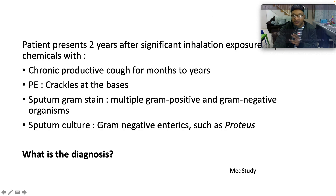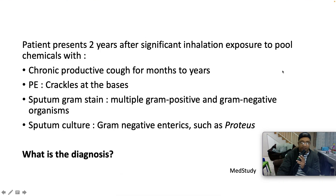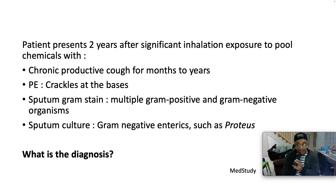So this is the typical illness script for someone who has bronchiectasis. A patient comes to you presenting with a chronic history, after significant inhalation exposure to pool chemicals, and comes to you complaining of a chronic productive cough — they say for months to years. It's definitely chronic, and classically has crepitations at the bases on physical examination.